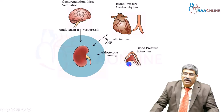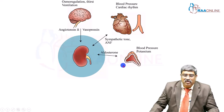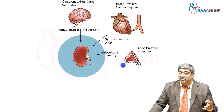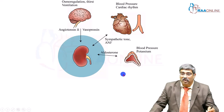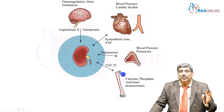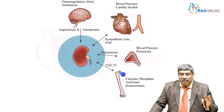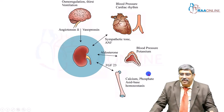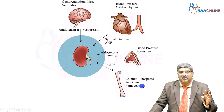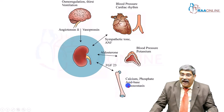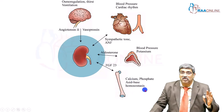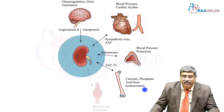With regard to the suprarenal gland, through aldosterone, your potassium might be altered and blood pressure might be high or low. Through fibroblast growth factor 23 and bone, your calcium and phosphate will be altered. Acid-base homeostasis will also be altered.